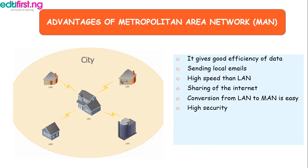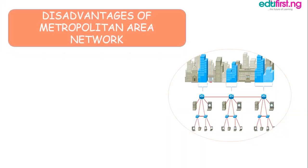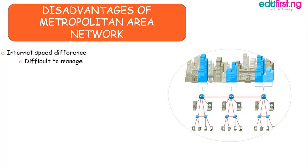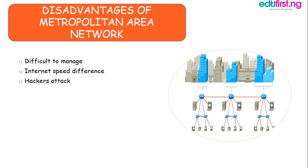Advantages of metropolitan area network: one, it gives good efficiency of data for sending local emails; three, high speed enables local area networks to share the internet; five, conversion from local area network to MAN is easy; and six, there is high security in metropolitan area network. Disadvantages: one, it is difficult to manage; two, internet speed differs; three, hackers can attack; four, technical staff is required to set it up; and five, more wires will be needed.